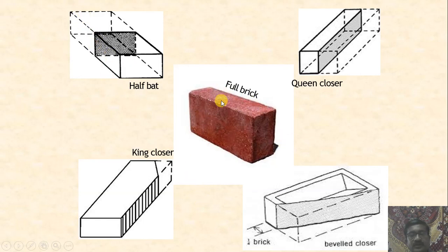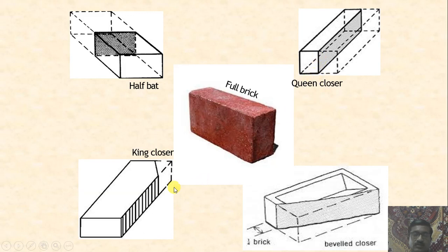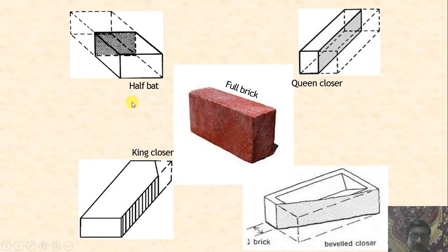Looking at a full brick: the long face is the stretcher face and the short face is the header face. Cutting the brick in half lengthwise gives a queen closer. Cutting in the king closer fashion gives a king closer, and a cut from one end at an angle gives a beveled closer. These closures are necessary in construction to break the joints, as we will see.